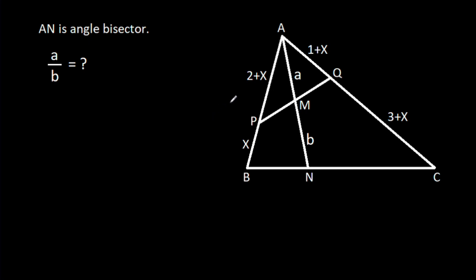In this video, we have been given that AP is 2 plus X, BP is X, AQ is 1 plus X, CQ is 3 plus X, and AN is the angle bisector, AM is A, and MN is B. Then we have to find A over B.